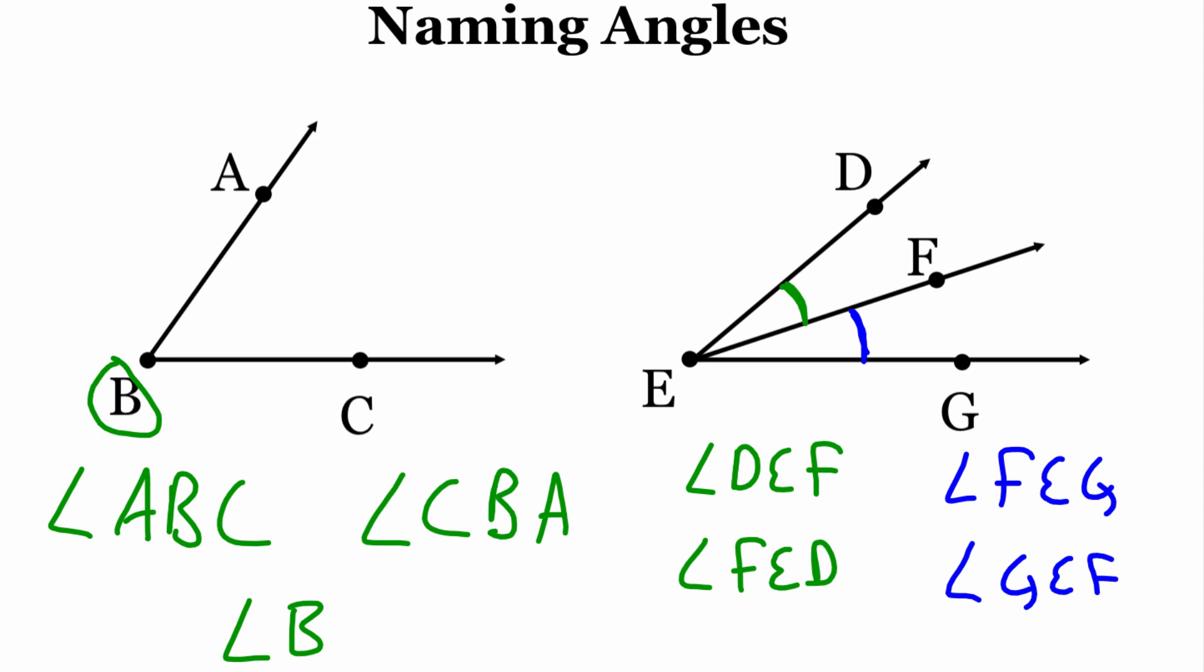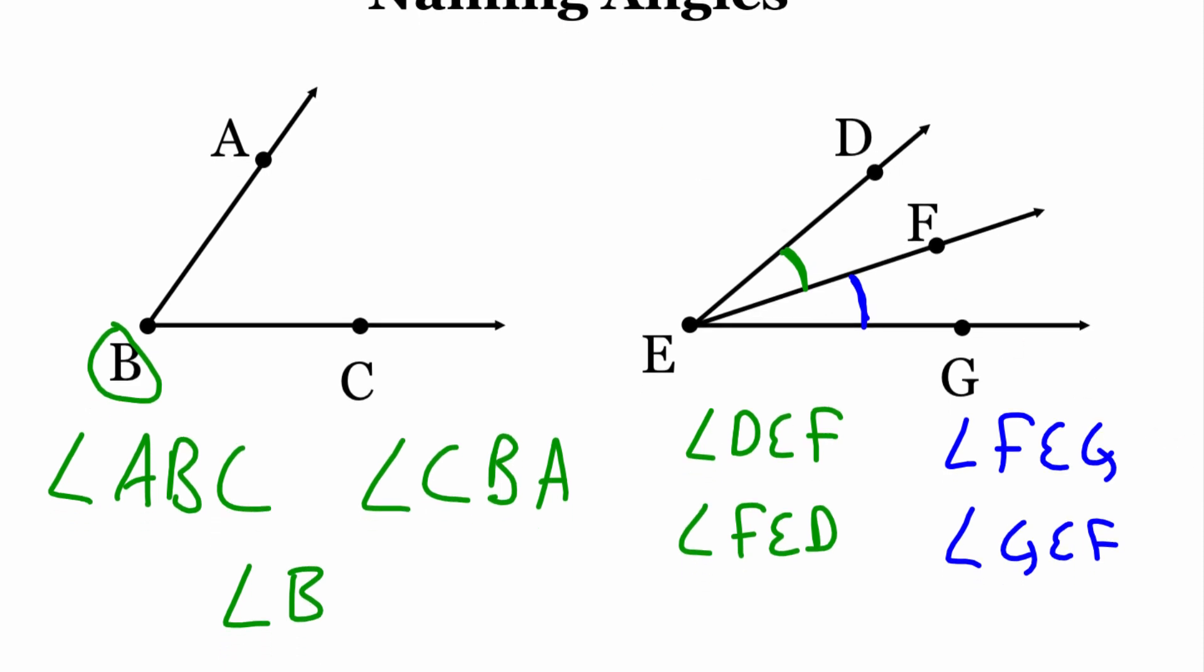But there's one more angle in the picture. Let me use red to highlight this one. There's this big angle that goes from the top all the way to the bottom. So if we look at naming that one, we could name that one angle D, E, G, or we could call it angle G, E, D.